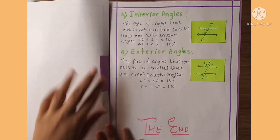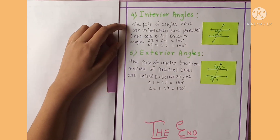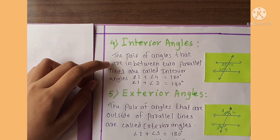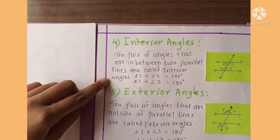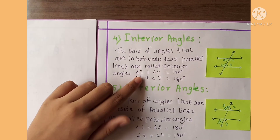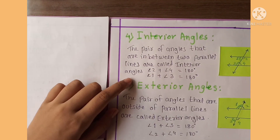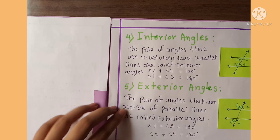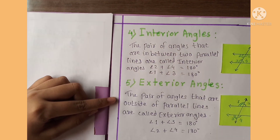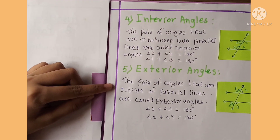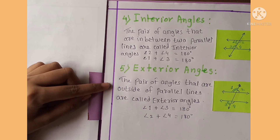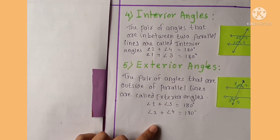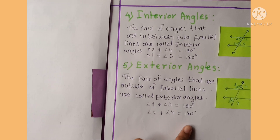The next is interior angles — the pair of angles that are in between parallel lines are called interior angles. Angle 2 plus angle 4 is equal to 180 degrees, and angle 1 plus angle 3 is equal to 180 degrees. Exterior angles — the pair of angles that are outside of parallel lines are called exterior angles. Angle 1 plus angle 3 is equal to 180 degrees, and angle 2 plus angle 4 is equal to 180 degrees.